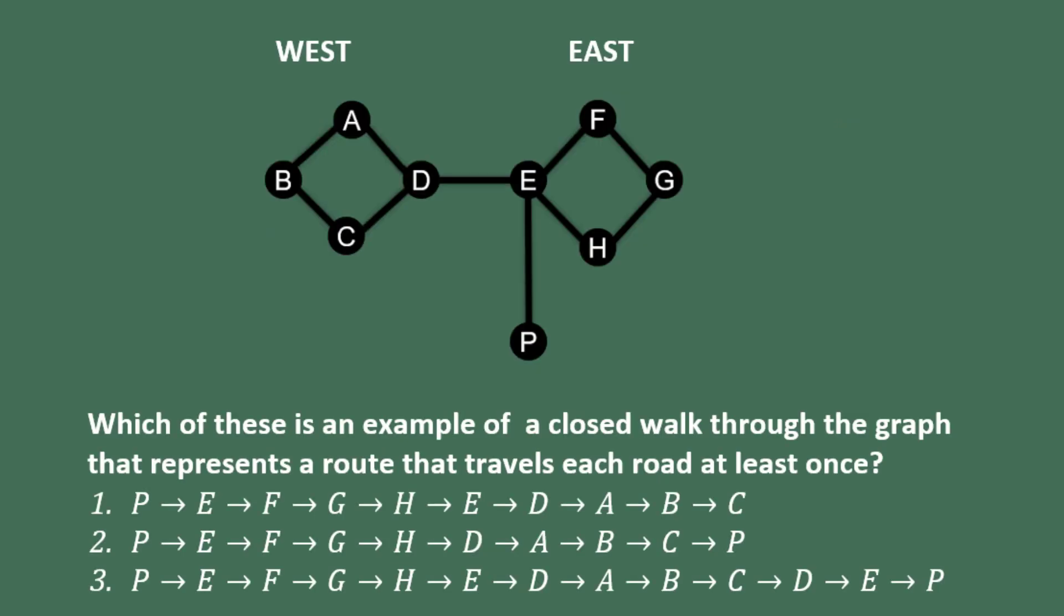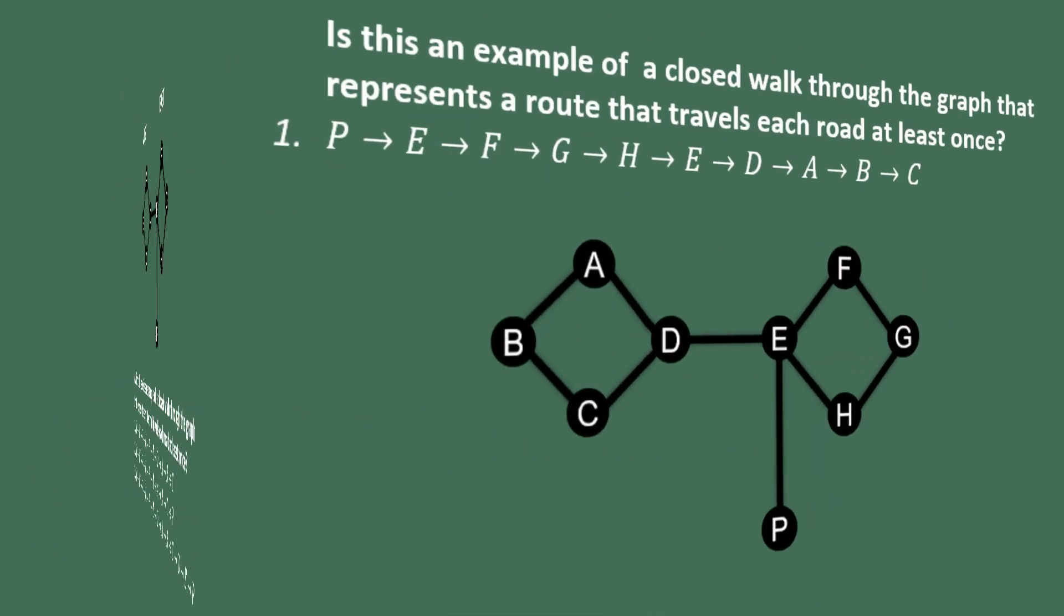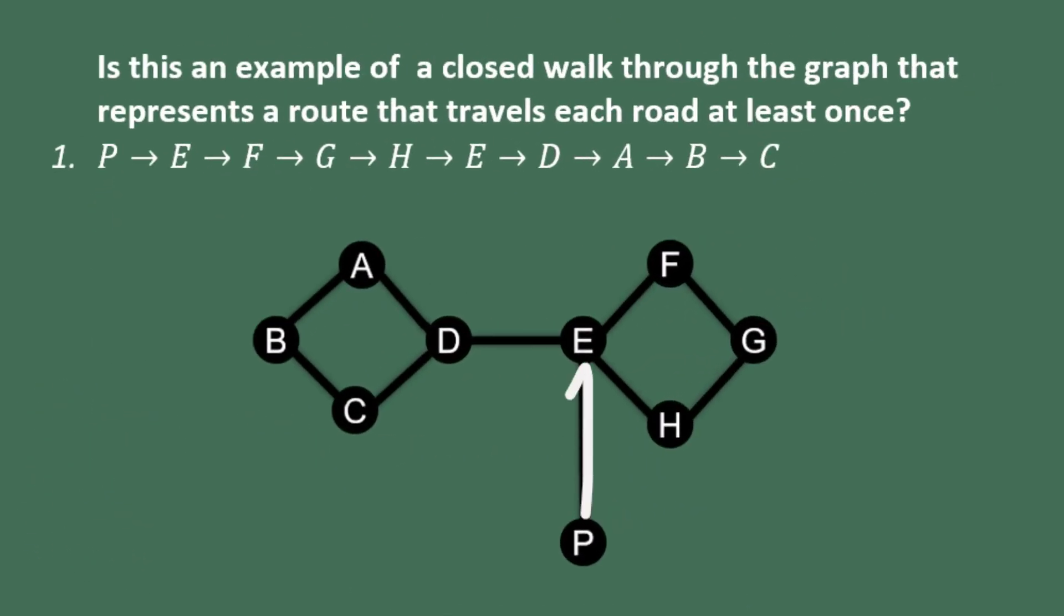Which of these is an example of a closed walk through the graph that represents a route that travels each road at least once so that all the mail gets delivered? Here's the first option: P to E, E to F, F to G, G to H, H to E, E to D, D to A, A to B, B to C. This is a walk, but it's not a closed walk because it begins at P but it ends at C.